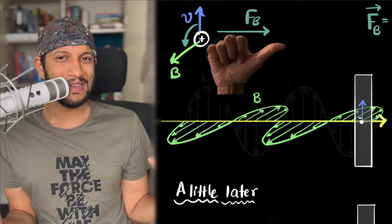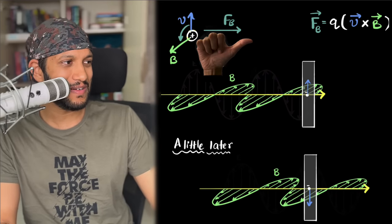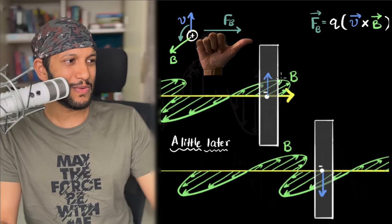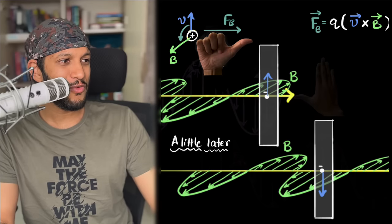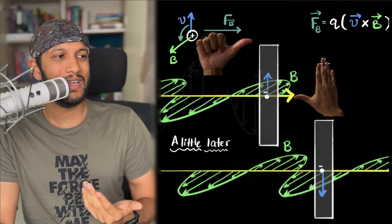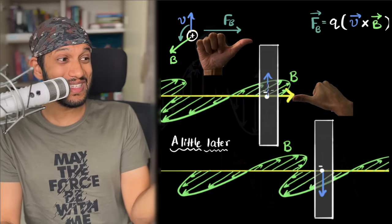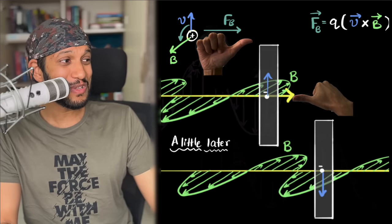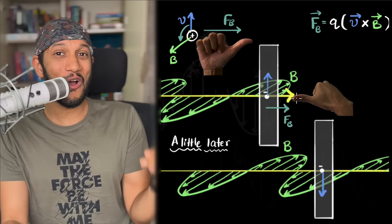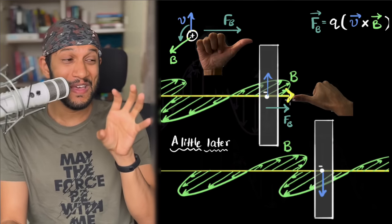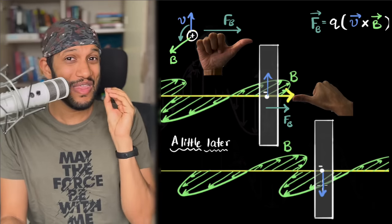Let's apply this to find the magnetic force on our electron. Zooming in: the electron's velocity is upward, and the magnetic field is into the page. Orient the right hand with fingers pointing up, curl them into the page — the thumb points to the left. But since it's an electron (negative charge), the magnetic force is to the right. This is interesting: the force is in the direction of the electromagnetic wave, the direction light is moving.